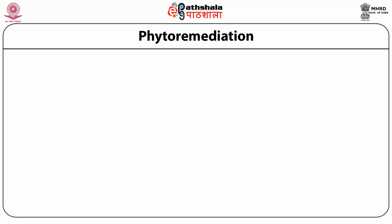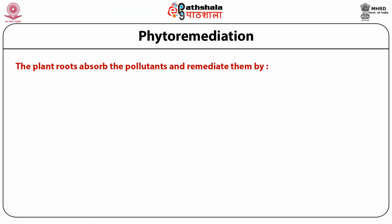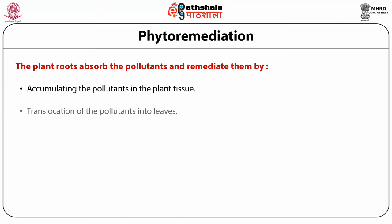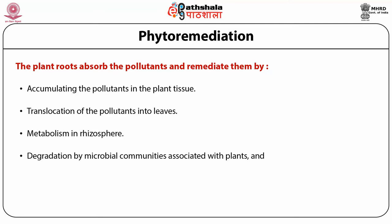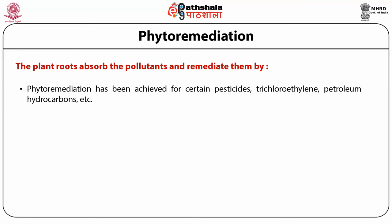Phytoremediation is the use of green plants and their associated microorganisms and agronomic patterns to remove pollutants or to make the environment free of pollutants. The plant roots absorb the pollutants and remediate them by accumulating the pollutants in plant tissue, translocation into leaves and volatilization from the leaf surface, metabolism in the rhizosphere, degradation by microbial communities associated with plants, and degradation by enzymes secreted by plants.